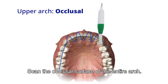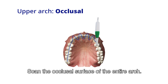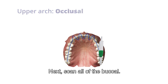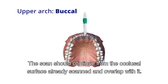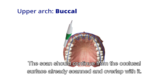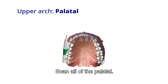Scan the occlusal surface of the entire arch. Next, scan all of the buccal. The scan should continue from the occlusal surface already scanned and overlap with it. Then scan all of the palatal, continuing from the occlusal surface already scanned and overlapping with it.